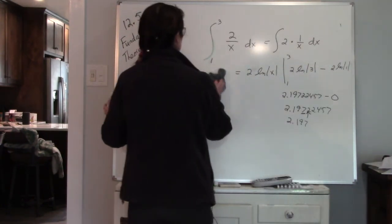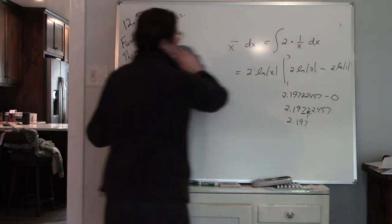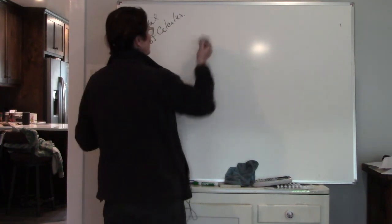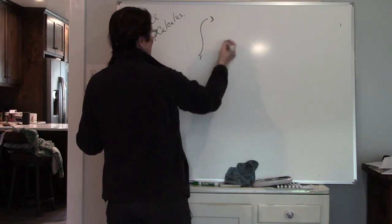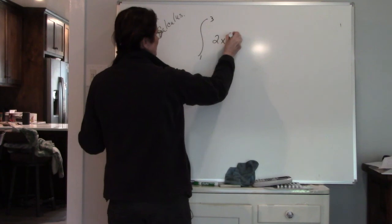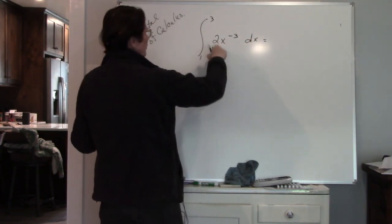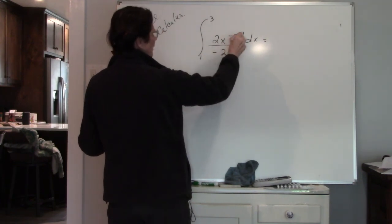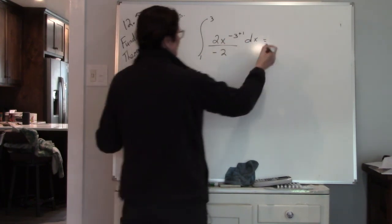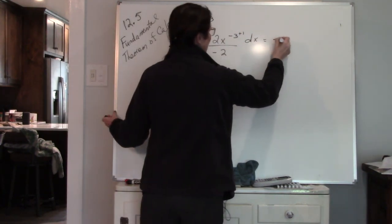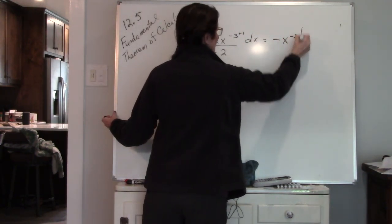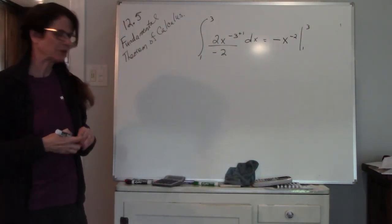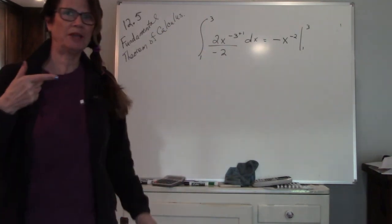As far as antiderivatives, if you come across a negative exponent, just remember that you are adding one. So if you have the antiderivative of 2x to the negative third dx, we are adding one and then dividing by the new exponent. So negative 3 plus 1 is negative 2. So 2 divided by negative 2 is negative x to the negative 2, and then you are going to evaluate it between 1 and 3. I'm going to stop here and then come back and do an application.